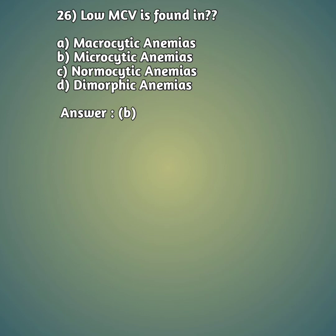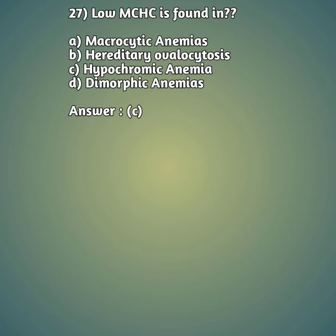Question 27: Low MCHC is found in — option A: macrocytic anemia, option B: hereditary ovalocytosis, option C: hypochromic anemia, option D: dimorphic anemia. The right answer is option C, hypochromic anemia. Hypochromic means the color of the RBCs is less than the normal level.